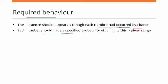And each number should have a specified probability of falling within a given range. For example, when rolling a die, there are six possible outcomes with specified probabilities. The probability of getting 1 is 1/6, the probability of getting 2 is 1/6.